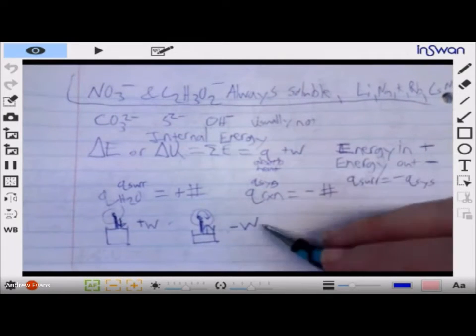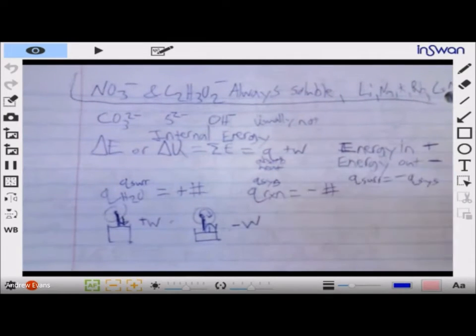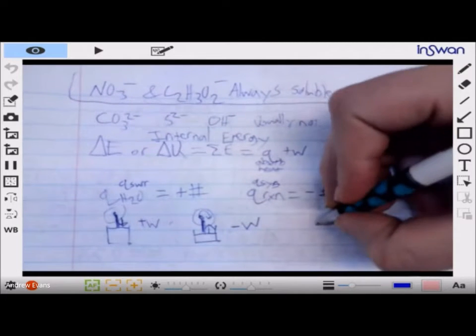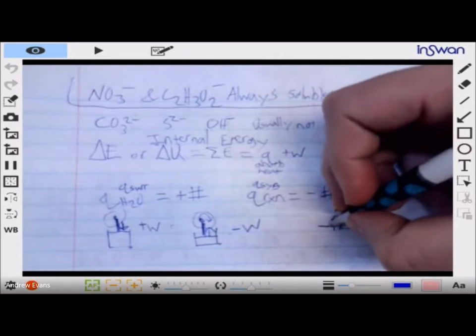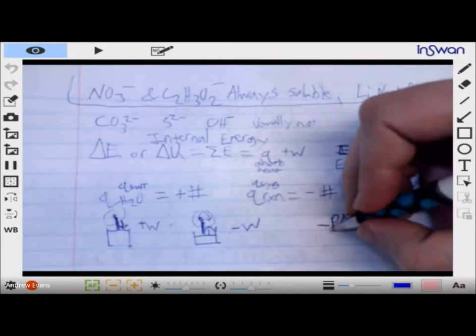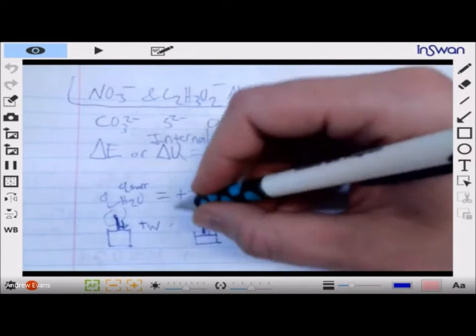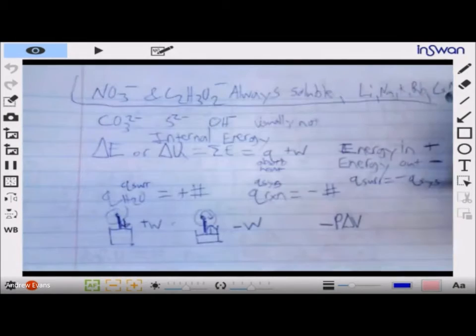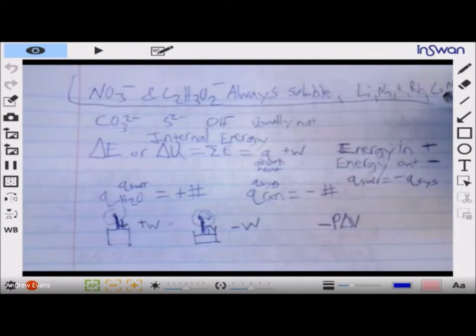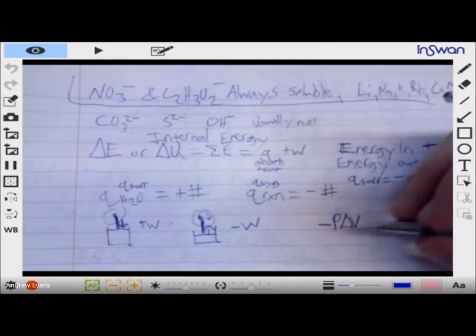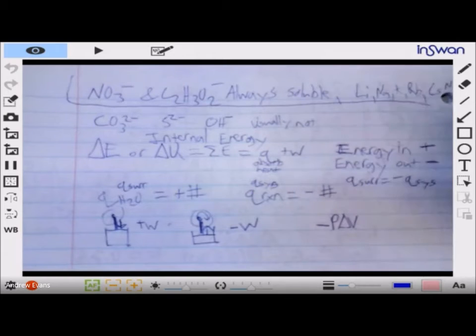Typically we focus more on q than we do on work, but if we were to do work we can look at it as negative p delta v, where p is the pressure pushing down - the pressure, the weight of this piston essentially - versus how much volume does that gas change. And we're allowed to figure that out, and so that becomes our work.